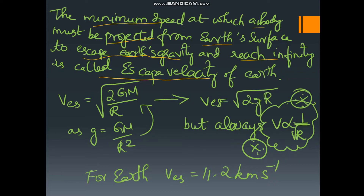The formula for escape velocity is given by the square root of 2GM divided by r. This is a very, very important formula — you must remember this formula.